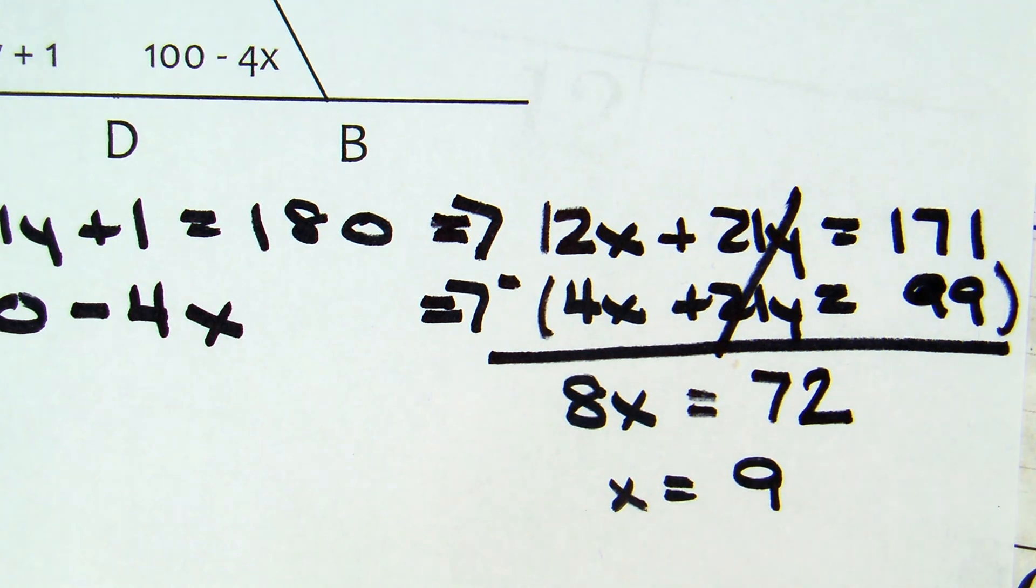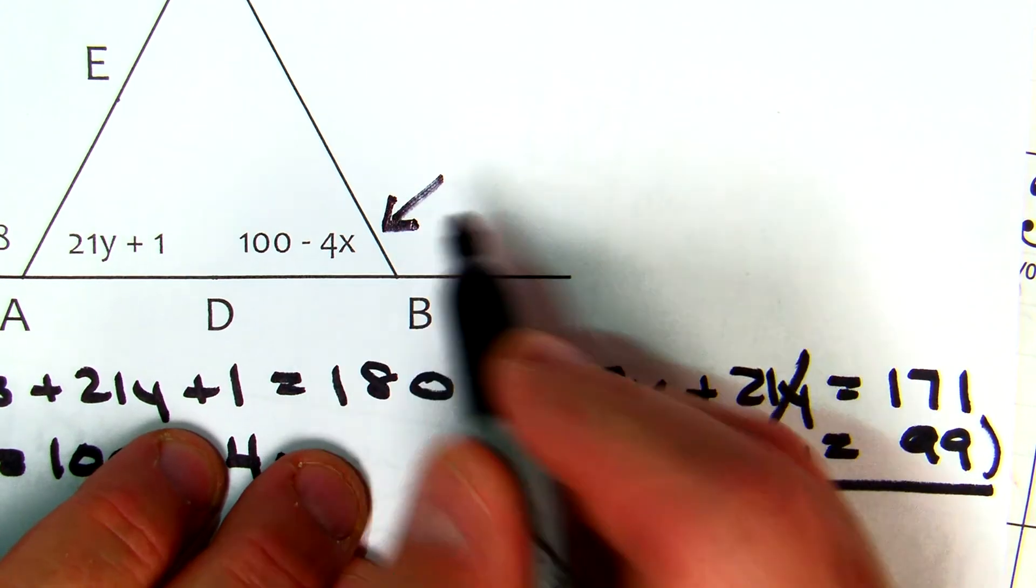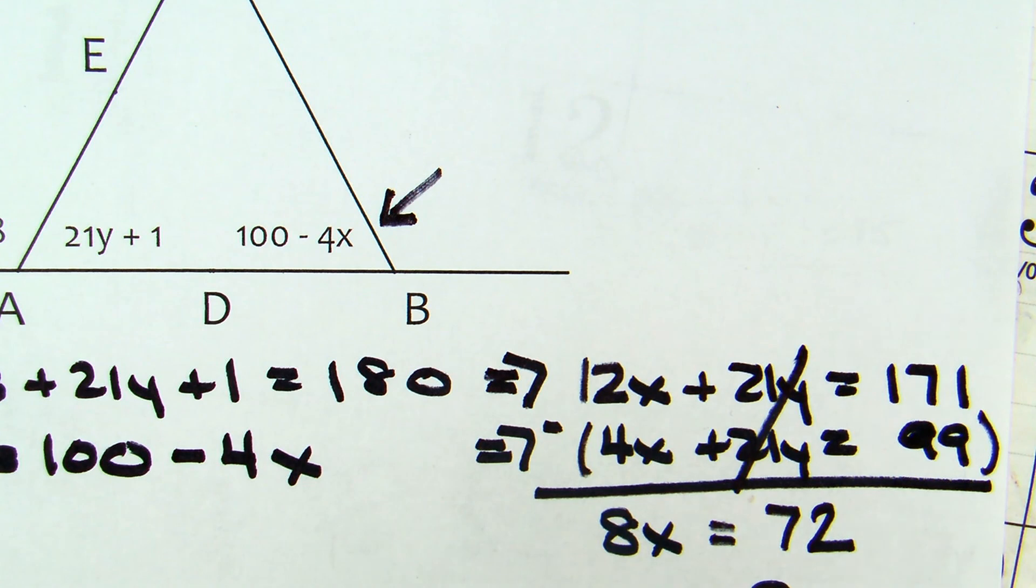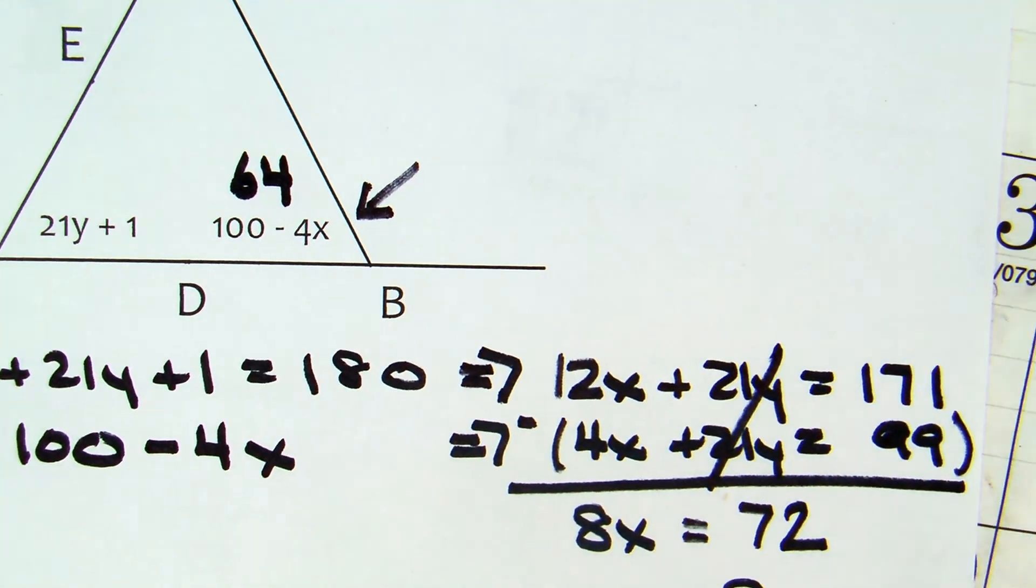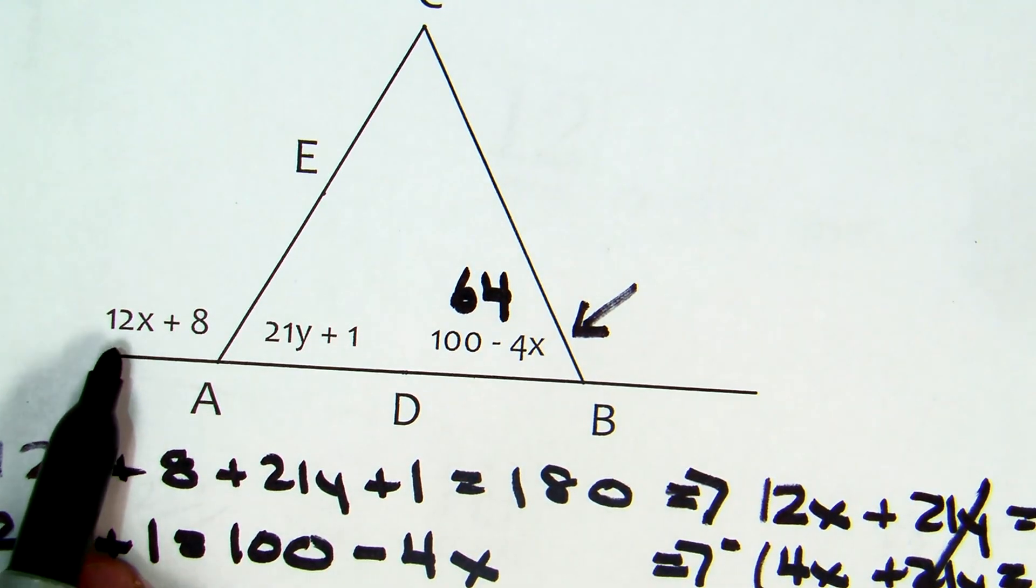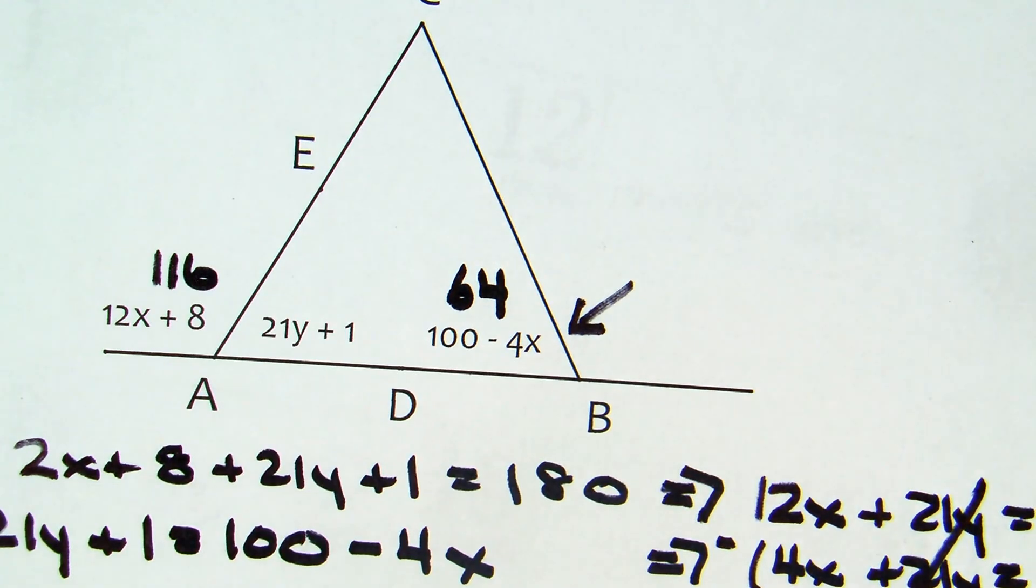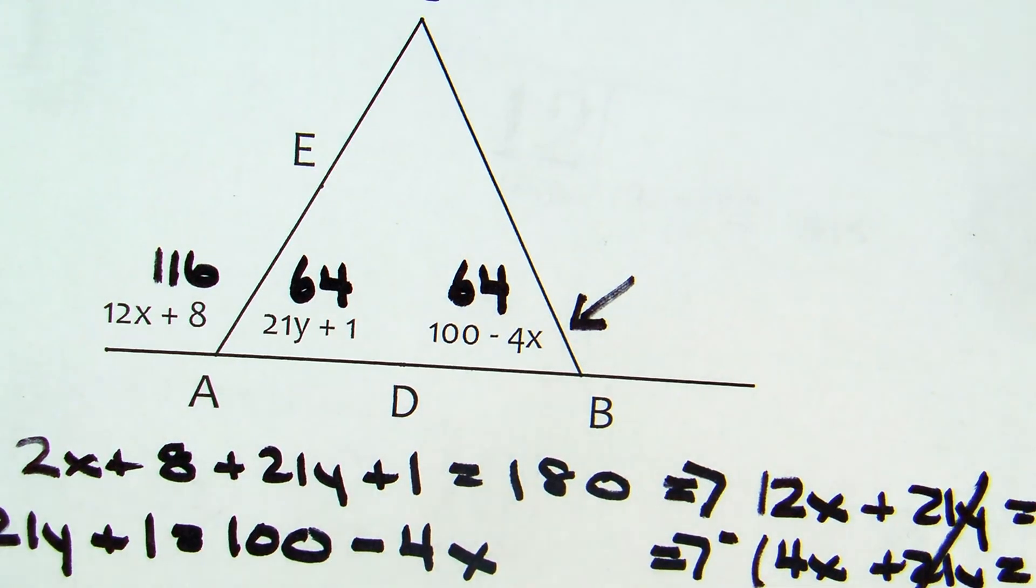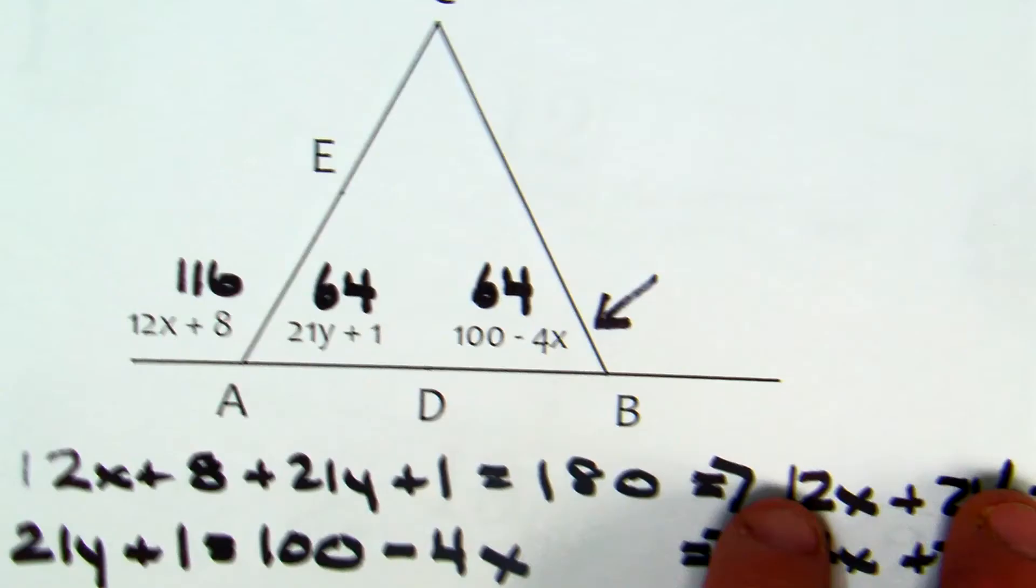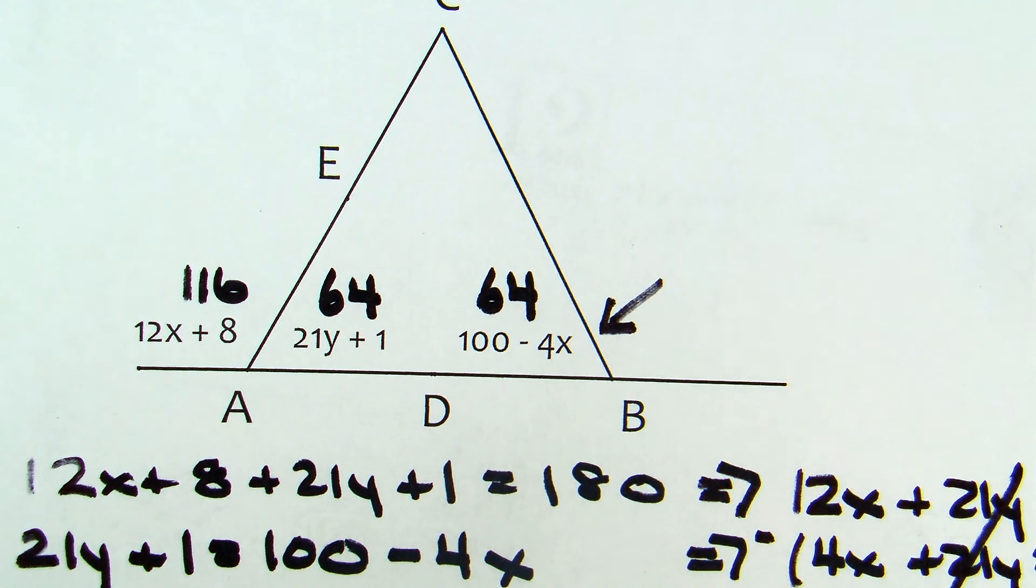I can then take that x and plug it back in. If I plug it in here, 4 times 9 is 36. 100 minus 36 is 64. If I plug it into the exterior angle over there, 12 times 9 is 108. 108 plus 8 is 116. And then by linear pairs, 180 minus 116 is also 64 to confirm that I did it right. Or you can plug back in and get y.